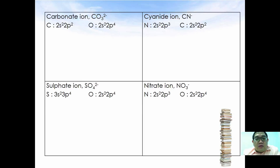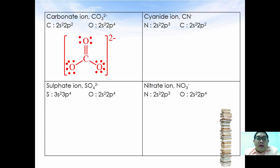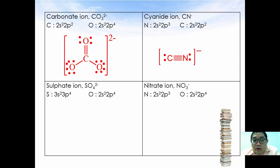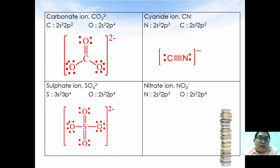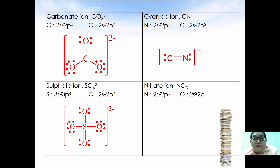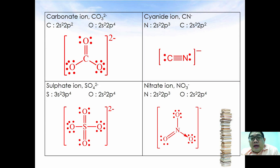Covalent bonds not only exist in neutral molecules but also exist in some ions. For example, the carbonate ion (CO₃²⁻) contains covalent bonding. The cyanide ion also has covalent bonding with a lone pair electron on each carbon and nitrogen. The sulfate ion has two single S–O bonds and two double S=O bonds. The nitrate ion is another example. All these are examples of ions which have covalent bonds in them.